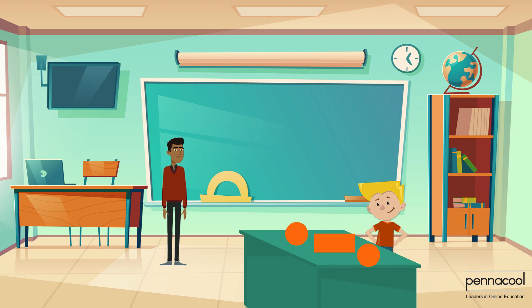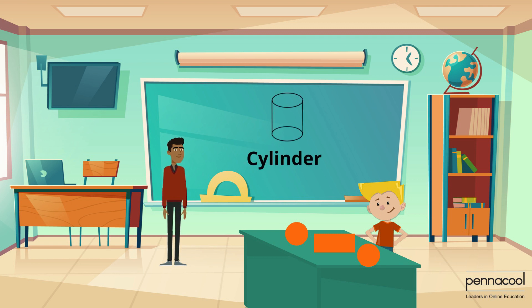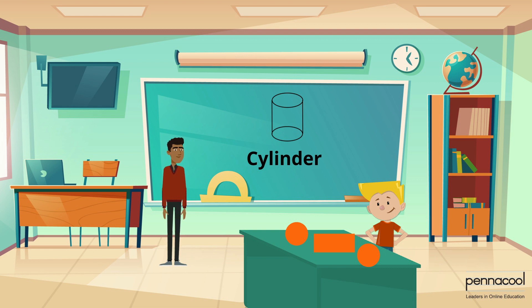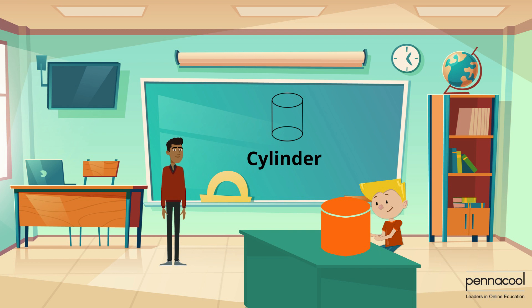Next, he is given a cylinder. The two surfaces at the top and bottom are circles. The curved surface takes the form of a rectangle that wraps around the solid.